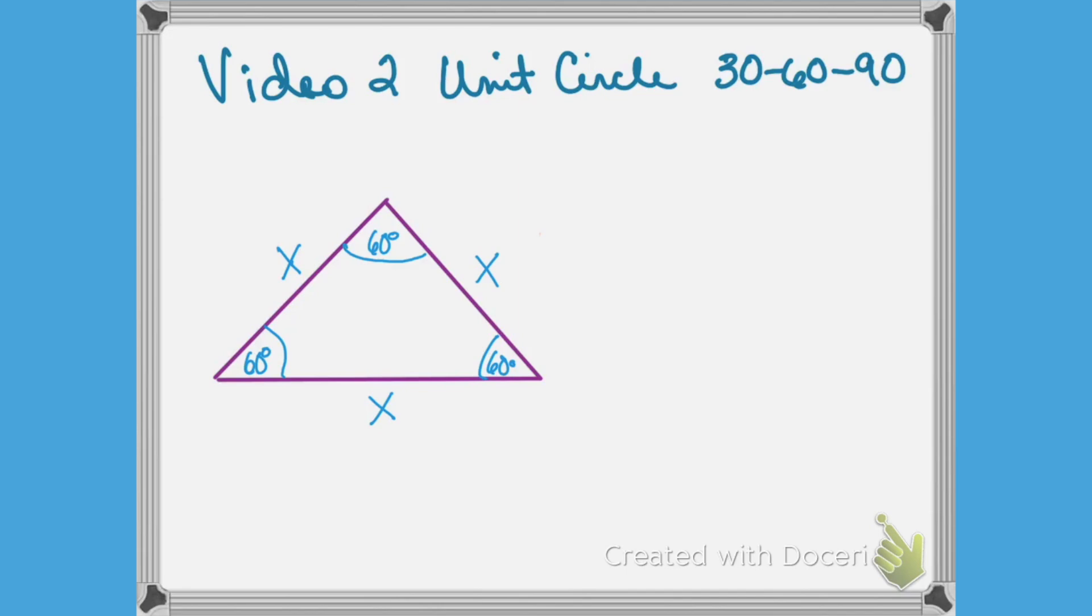So today we're going to discover the 30-60-90 triangle, and in order to do that, I actually have to start with an equilateral, equal angular triangle, the 60-60-60 triangle. And what I'm going to do is I'm going to drop that perpendicular right in the middle here, and what that does is it cuts that 60 degree in half, which gives me my 30 degrees, and when you drop a perpendicular, that makes that right angle that we need.